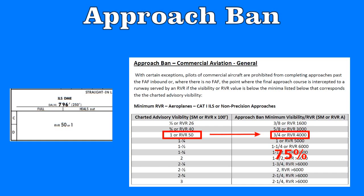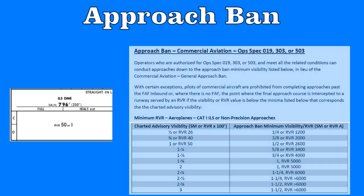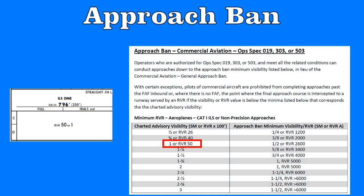So what about that special OPSPEC version? Here's the table if you have the OPSPEC. Looks pretty similar, except pick any advisory visibility on the table and look at the required value. In this case, the approach ban value is always 50% of the advisory visibility, not 75%. This table is quite easy to memorize.